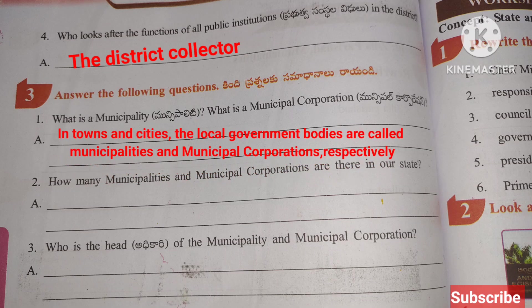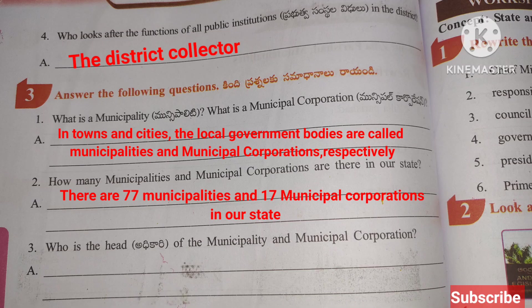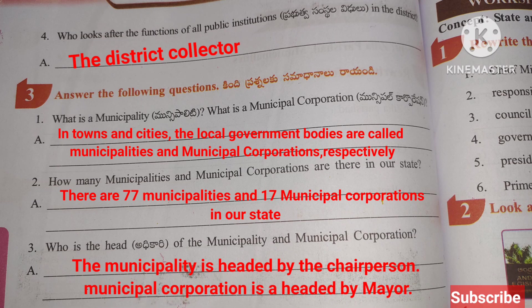In towns and cities, the local government bodies are called Municipalities and Municipal Corporations respectively. There are 77 Municipalities and 17 Municipal Corporations in our state.